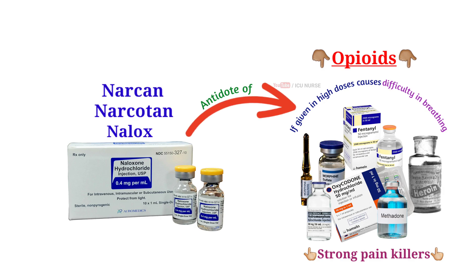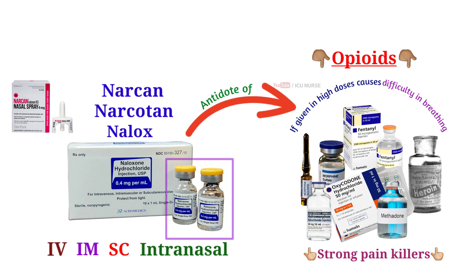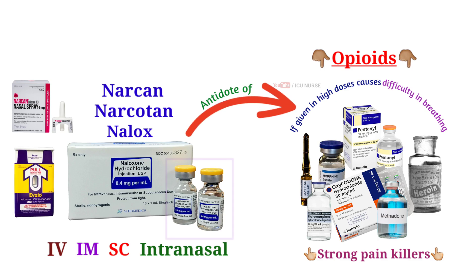Naloxone can be administered using four routes of administration: intravenous, intramuscular, subcutaneous, and intranasal. Naloxone is available as transnasal sprays, injectable solutions, and auto-injectors.